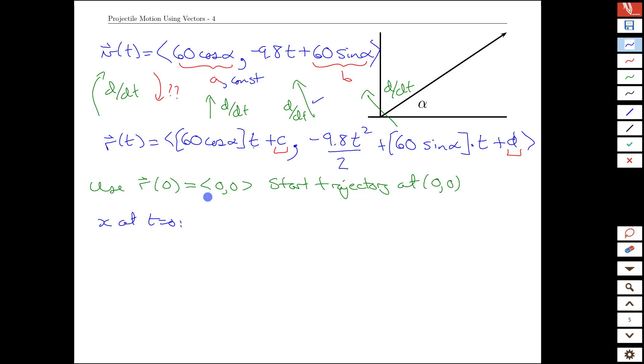And if we take advantage of that fact, x at time zero, we would have 60 cos(alpha), but times t. Well, t is zero. We'd have c equals our x coordinate times zero, which is just zero. Oh, that's nice.